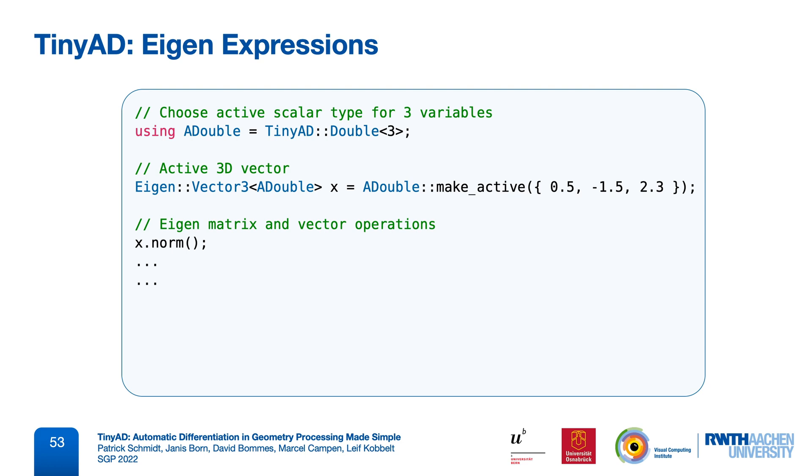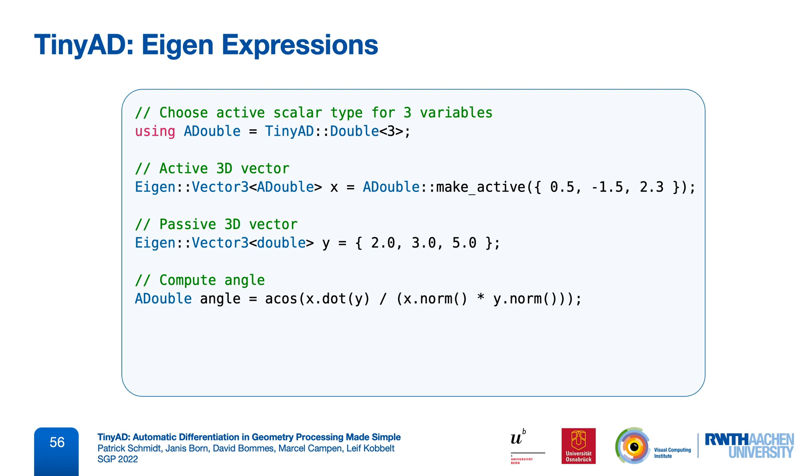For example, products, determinants, normalization, inversion, and so on. All of these are simply differentiated on a per-scalar level. We can of course still define any kinds of constant values using regular doubles, and then freely mix these into our computations. Here, for example, we compute the angle between two 3D vectors, and differentiate only with respect to one of them.